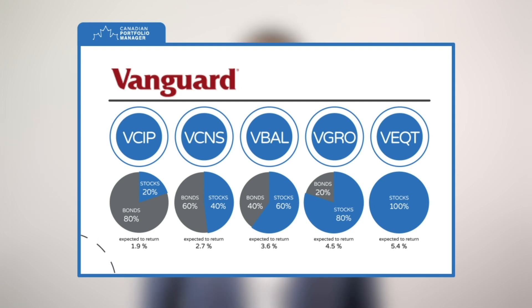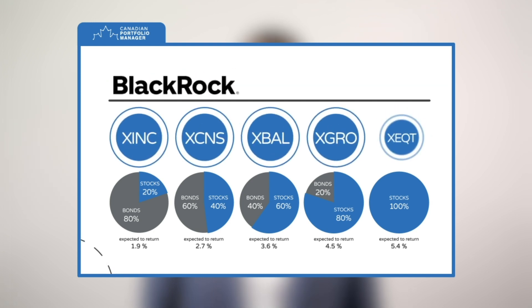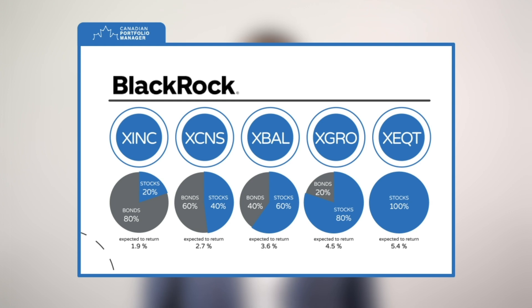As mentioned earlier, similar expected returns would also apply to the five iShares Asset Allocation ETFs: XINC, XCNS, XBAL, XGRO, and XEQT.